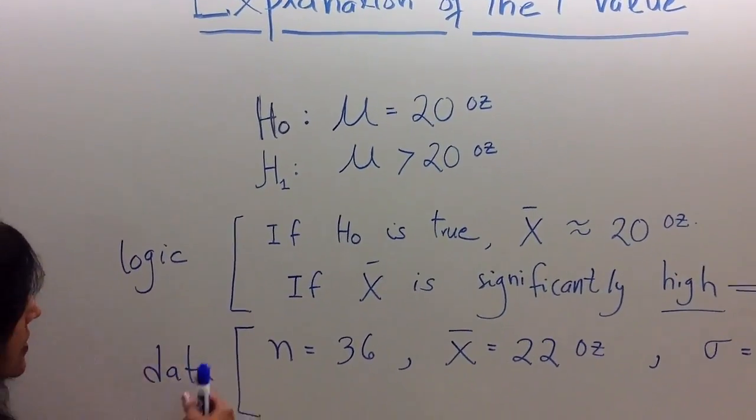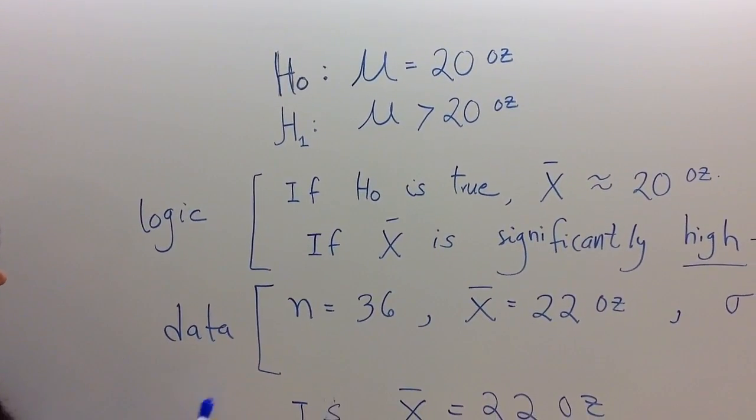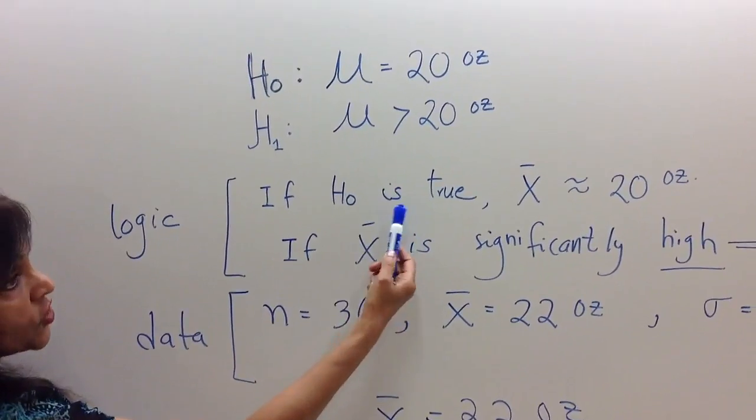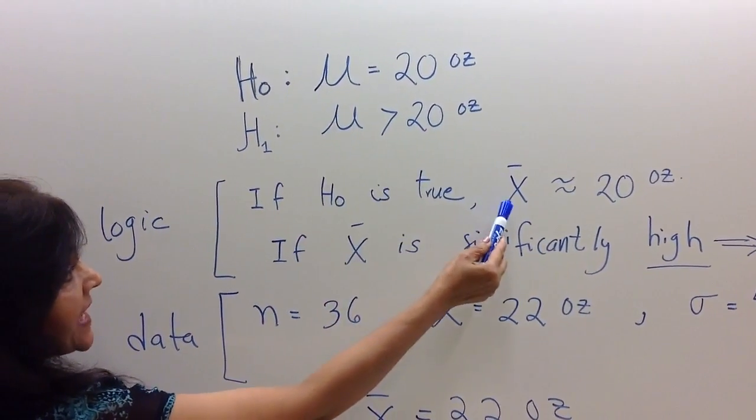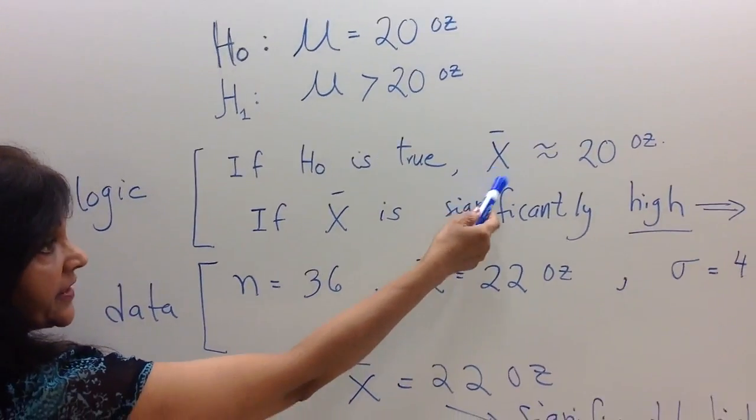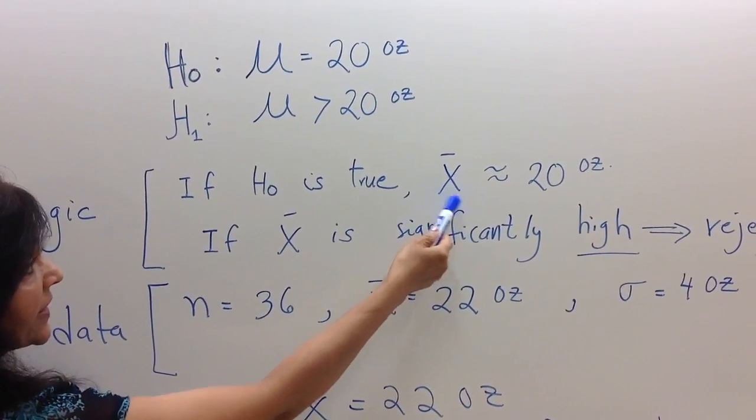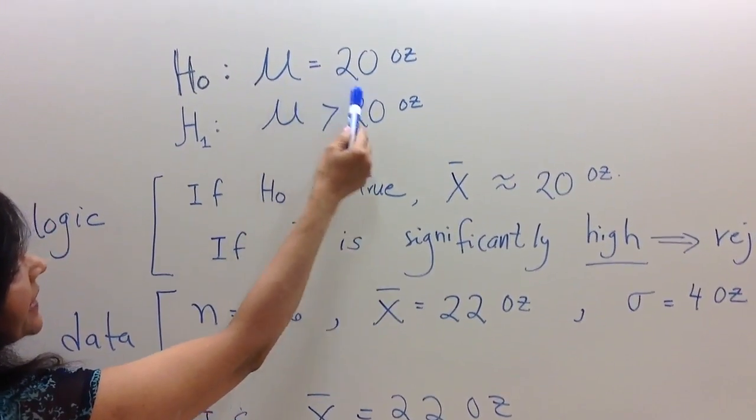So here is the logic of hypothesis testing: if null hypothesis is true, then the sample mean, if you take a random sample and calculate the sample mean, under the null hypothesis,